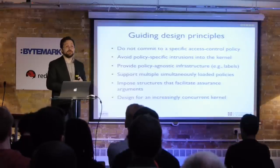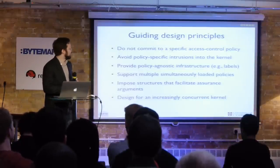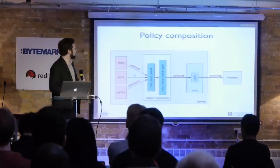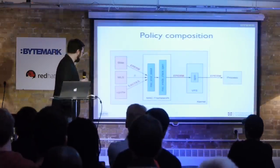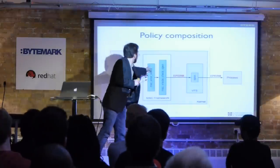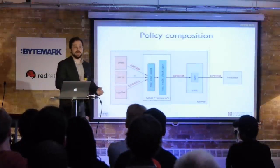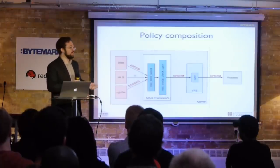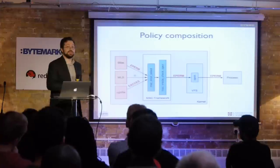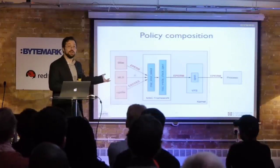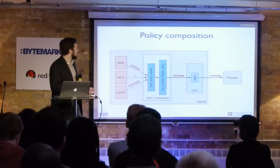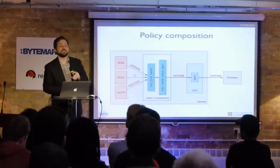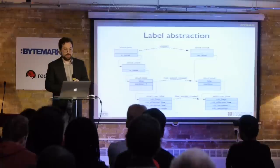On policy composition, we take a very simple model: if policies disagree, the most restrictive one wins. Why is this a good idea? It's not always what you want — you might have a privileged policy that says yes even when another says no. We disallow that because it's very hard to reason about. You can reason about all the policies in isolation if they have a fixed, easy-to-understand composition. Although we planned to have a pluggable, composable, programmable meta-policy, we never needed it, so we just didn't do it.